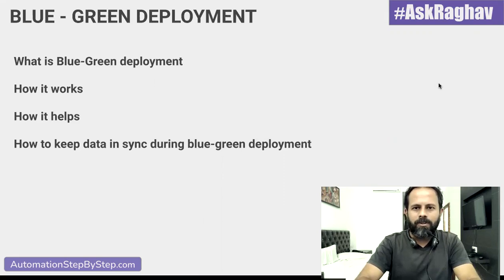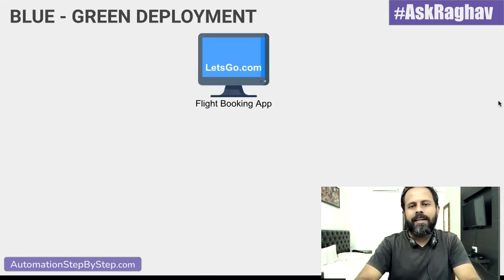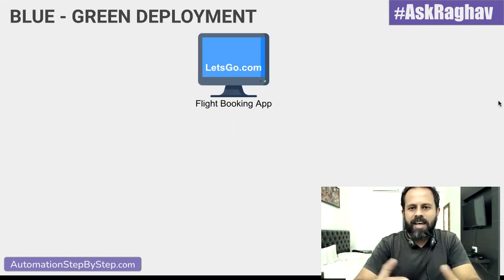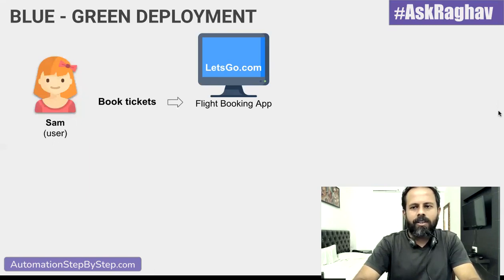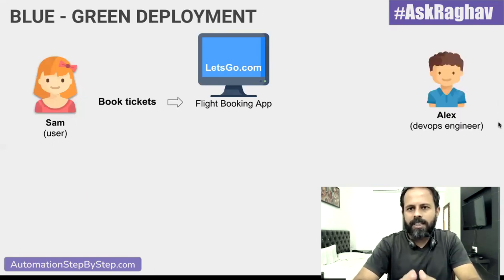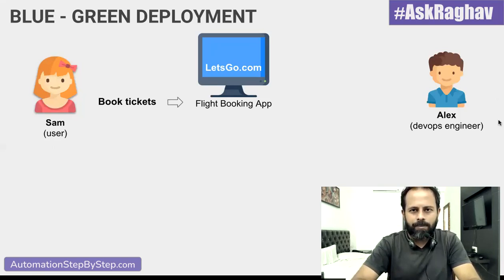Let's start with an example. Suppose we have a flight booking application. We have Sam, who is a user and she wants to book some flight tickets on this application. On the DevOps side, we have Alex, who is a DevOps engineer and he is responsible for doing all the deployments on this application.